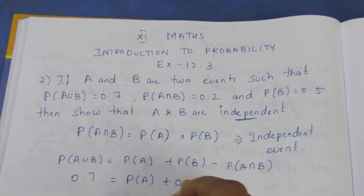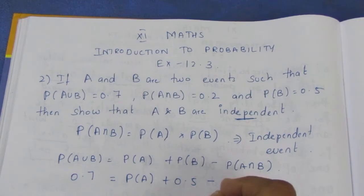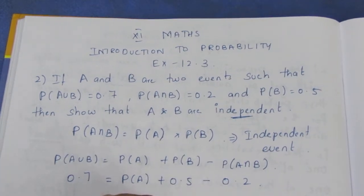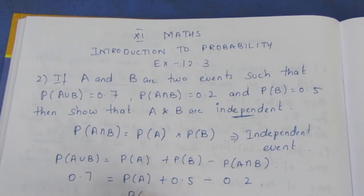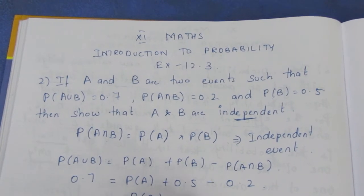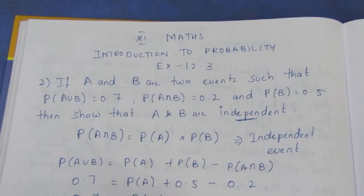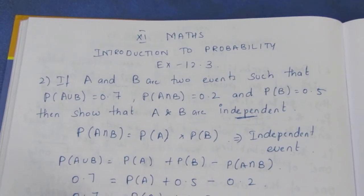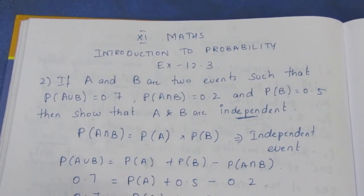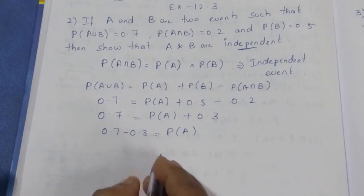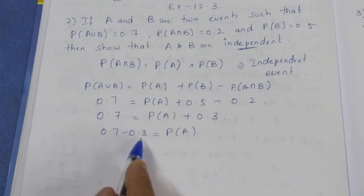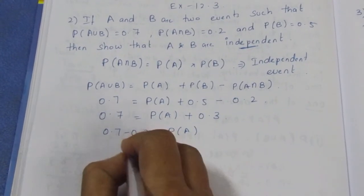Substituting the values: 0.7 = P(A) + 0.5 - 0.2, so 0.7 = P(A) + 0.3, therefore P(A) = 0.4.